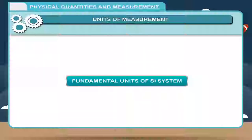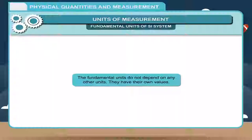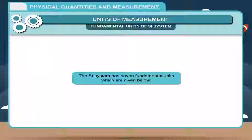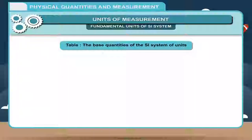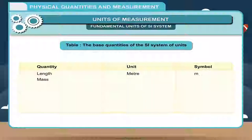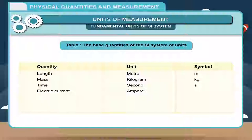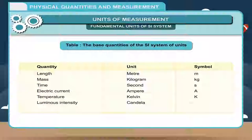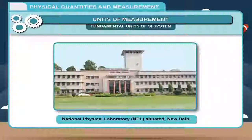Fundamental units of the SI system do not depend on any other units; they have their own values. The SI system has 7 fundamental units: Length (meter, m), Mass (kilogram, kg), Time (second, s), Electric Current (ampere, A), Temperature (kelvin, K), Luminous Intensity (candela, cd), and Amount of a Substance (mole, mol). In our country, the National Physical Laboratory (NPL) situated in New Delhi is authorized to maintain the national standards for all basic units in India.